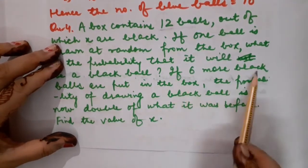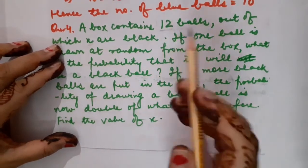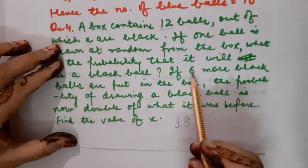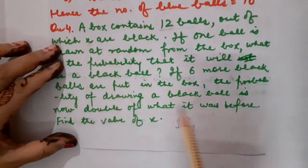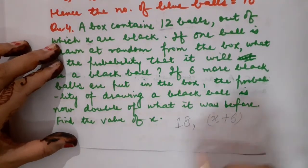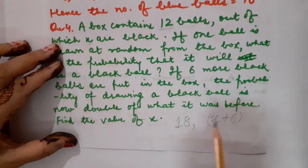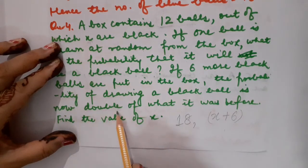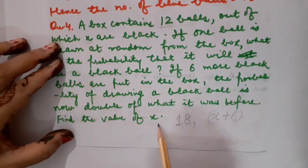Now, if 6 more black bowls are put in the box — there were 12 bowls earlier, 6 more are added, so the total becomes 18. And all 6 new ones are black. Earlier the number of black bowls was x, so when 6 more are added it becomes x plus 6. The new probability of drawing a black bowl is now double of the probability we calculated earlier. We are going to calculate the value of x.